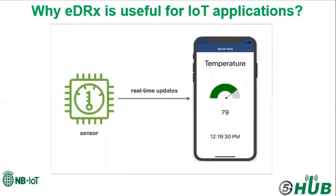Why is eDRX useful for IoT applications? If the device is sleeping for a long duration, it won't be reachable to the network during this period. Narrowband IoT devices are designed for applications where it's acceptable to remain unreachable for long periods and check paging every few hours. So eDRX works well for narrowband IoT devices.